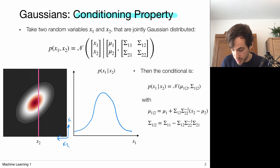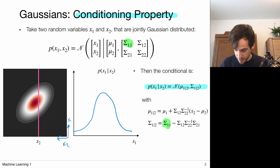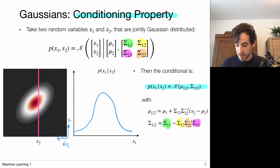It turns out that this conditional distribution is again a Gaussian with a particular mean, which can be derived from the means and covariance matrix of the original distribution. The covariance is based on the sigma11 component, the sigma22 component, and also the cross components sigma12 and sigma21. If I factorize my covariance matrix accordingly, I can obtain the covariance matrix and mean for my conditional distribution.